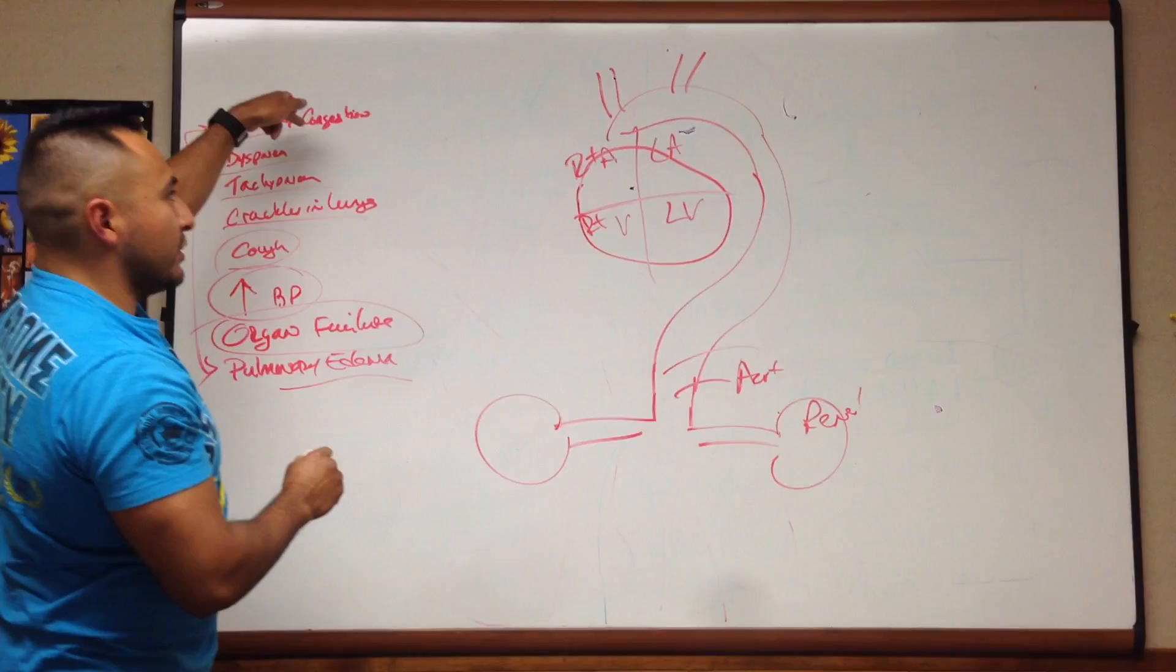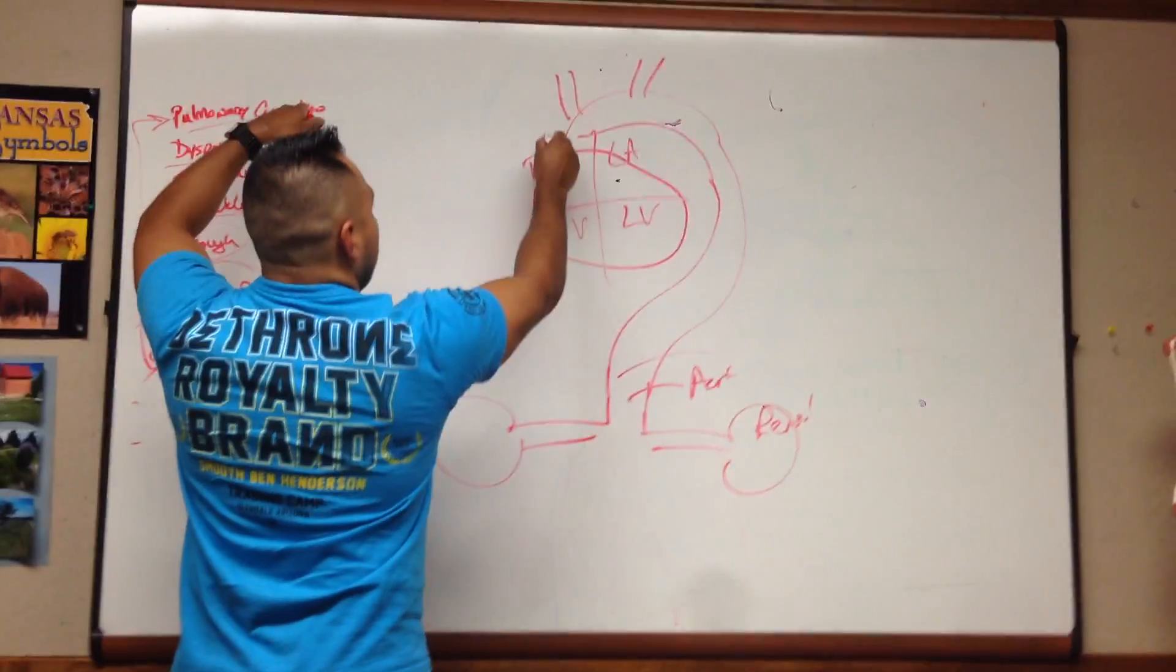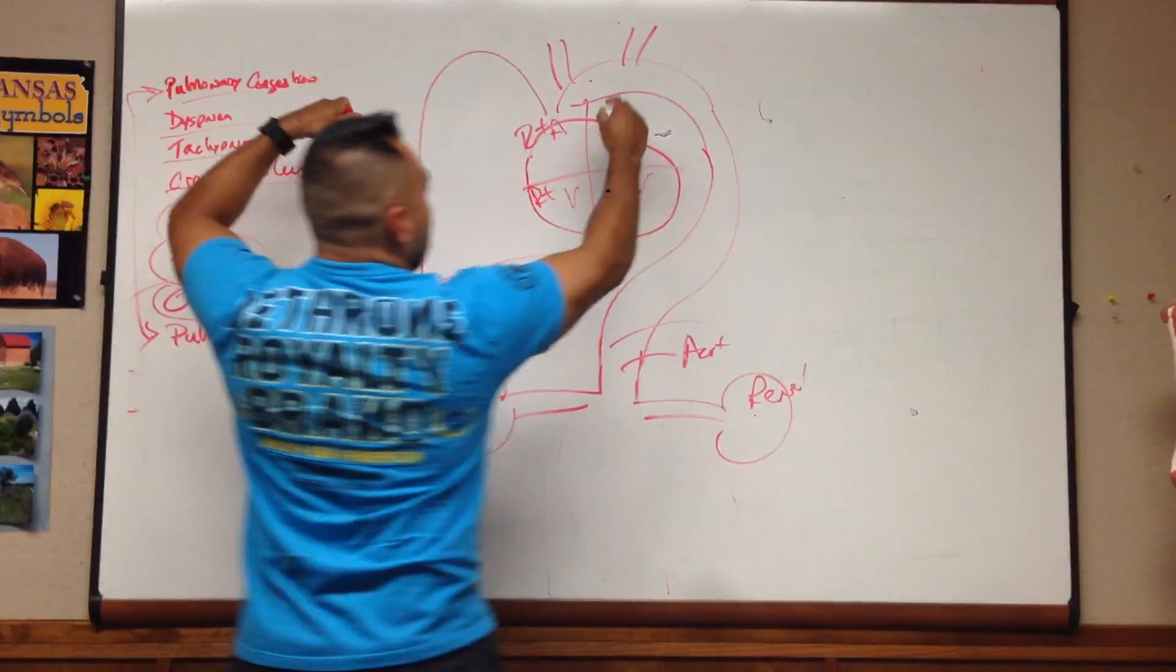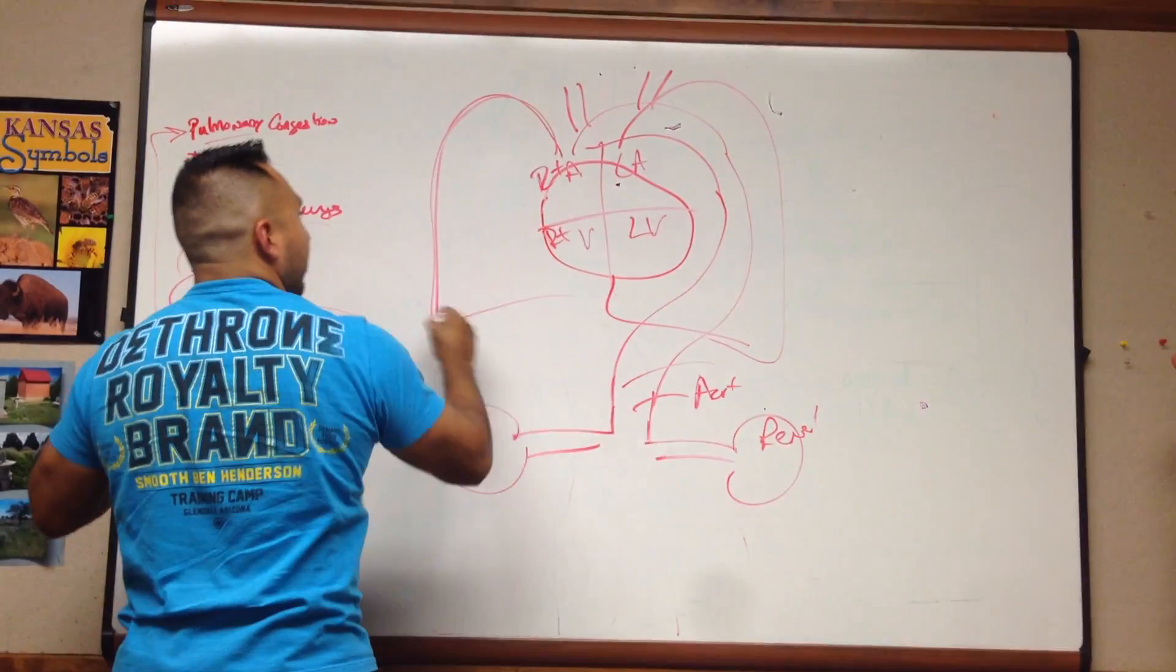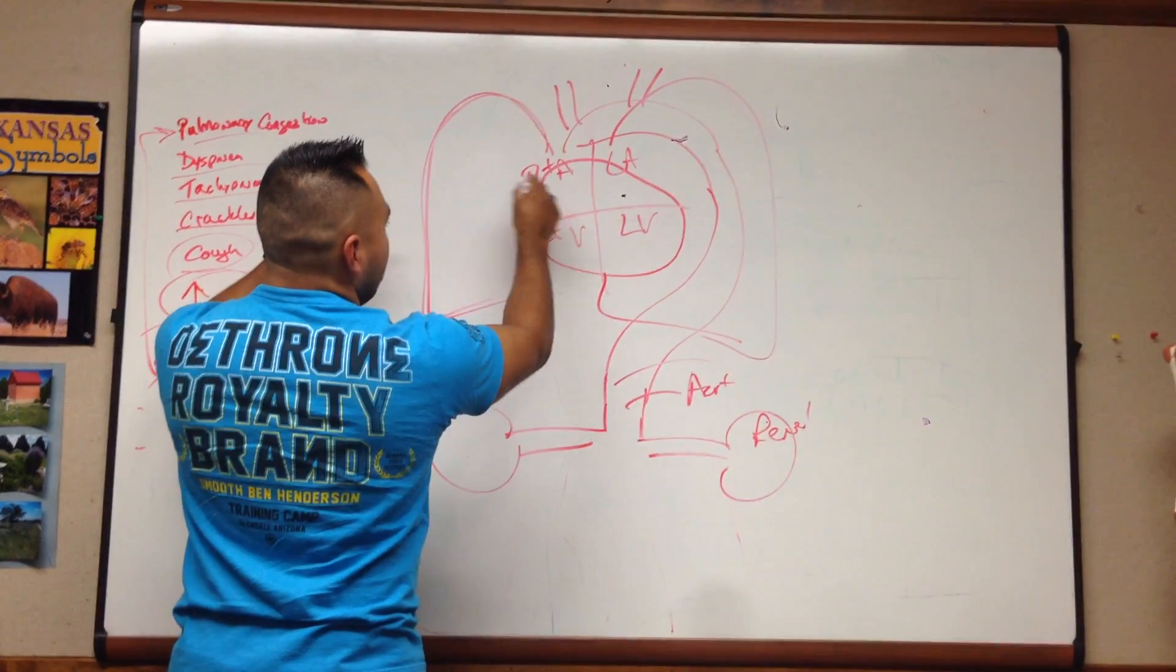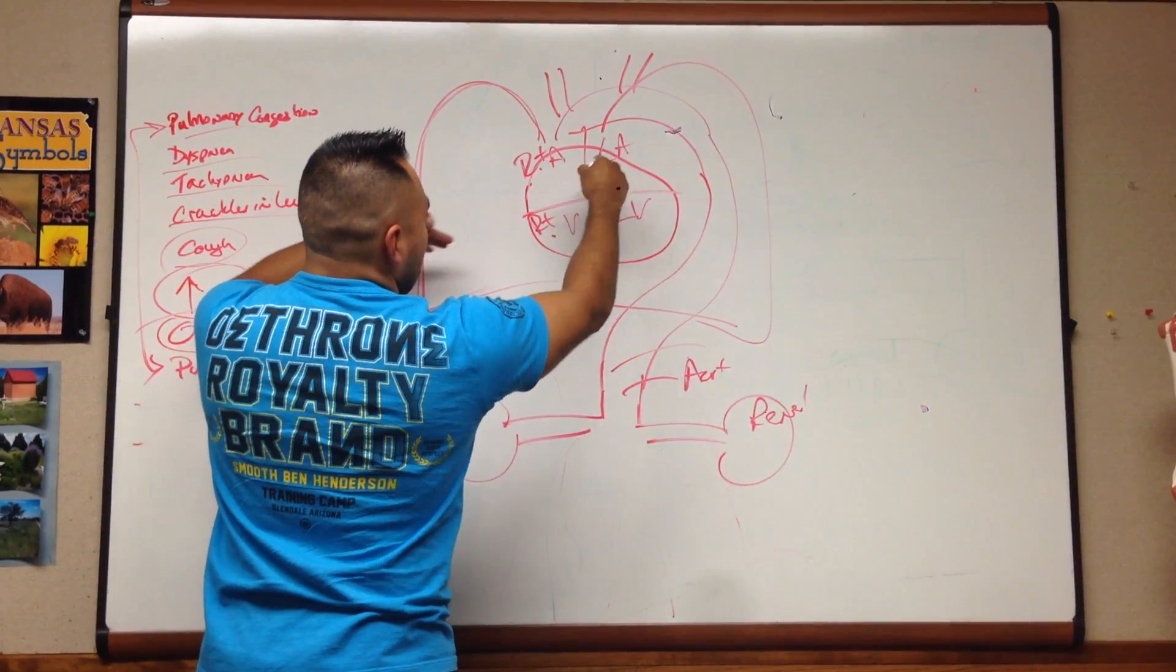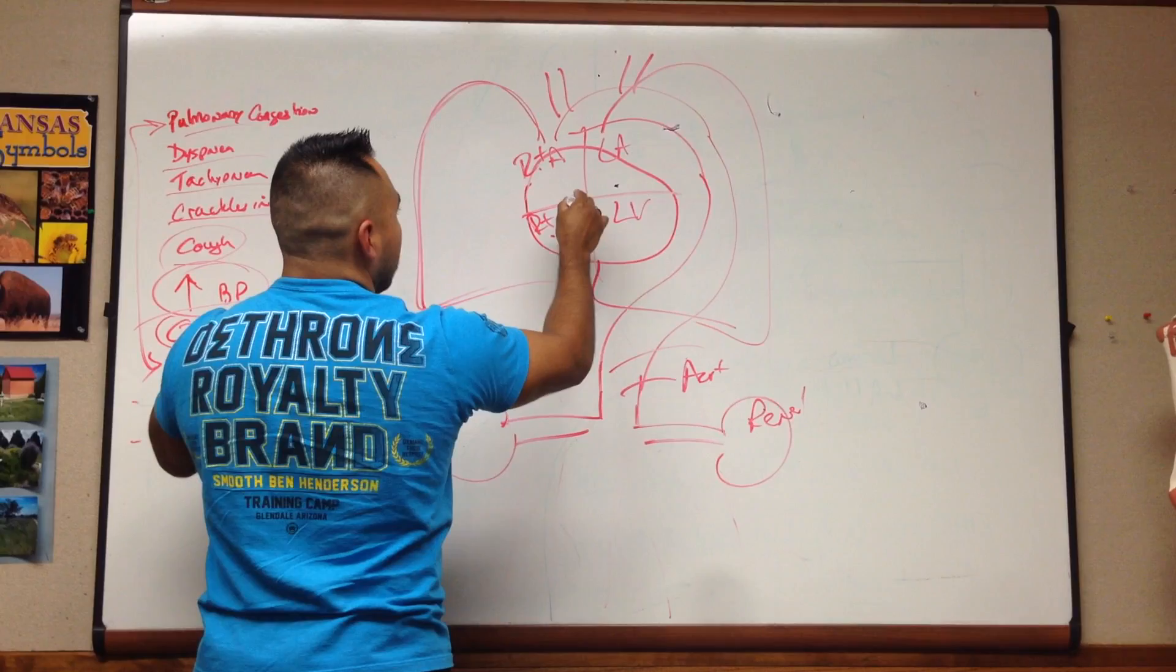Now, how do you get pulmonary congestion? Remember that behind here, by the lungs. Now, let's just forget about the aorta for now, but here lie the lungs. Blood's going to come in from the right atrium, right ventricle. It's going to go into the lungs.